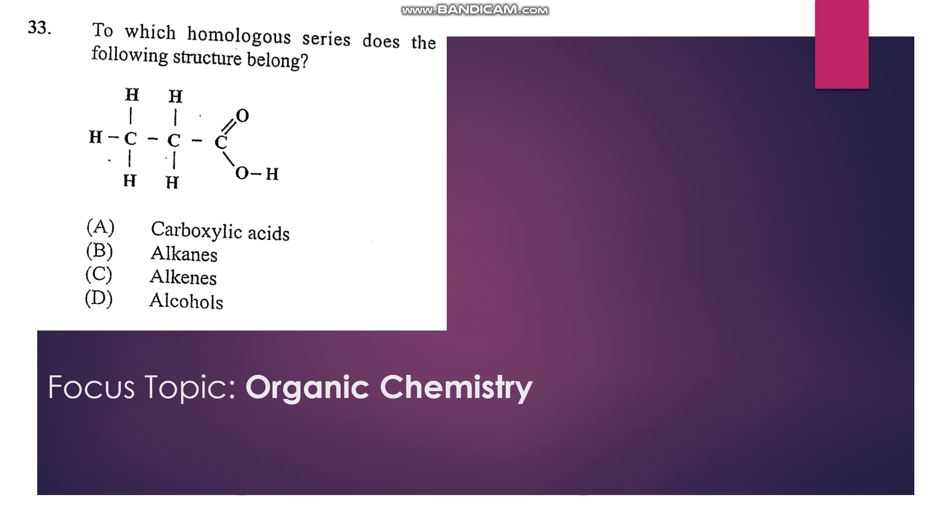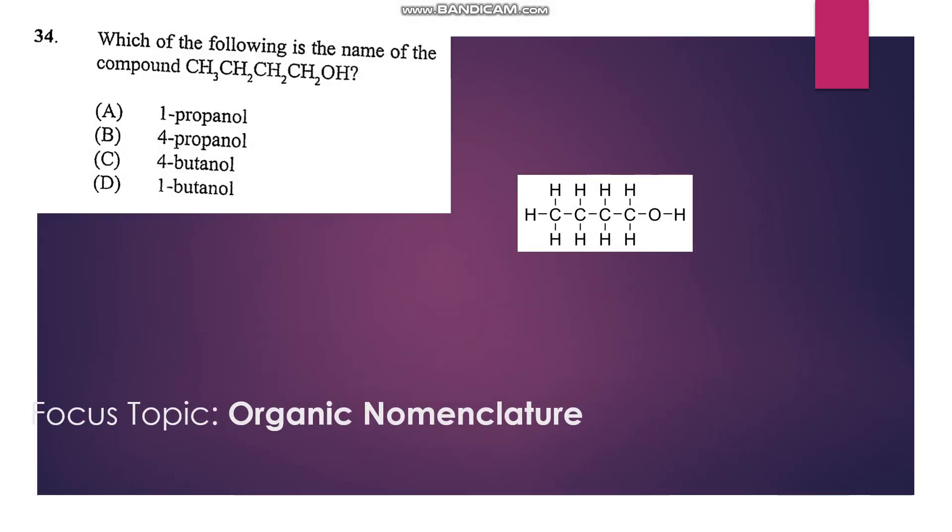34: Which of the following is the name of the compound CH3CH2CH2CH2OH? We count the number of carbon atoms: one, two, three, four. So we are looking at a butanol. The OH group is an alcohol group, and we see it's on carbon atom number one, so we have 1-butanol. The answer is D.